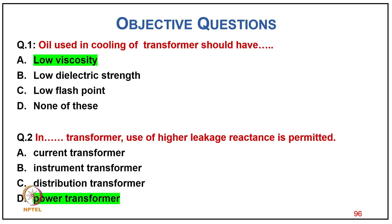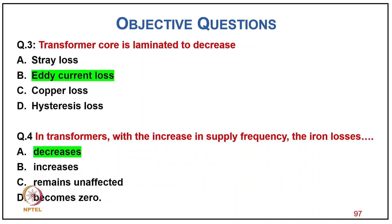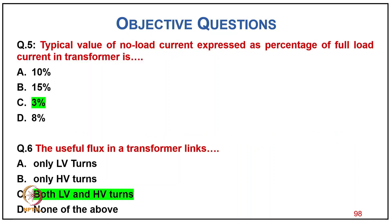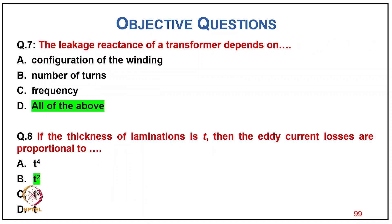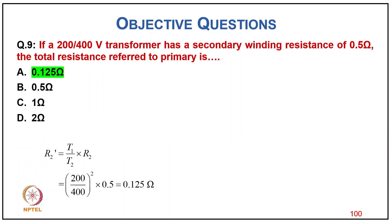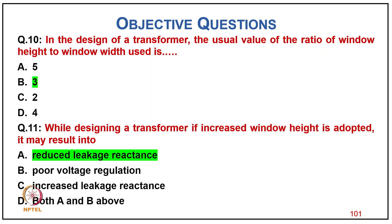Objective questions: Oil used in cooling transformers should have low viscosity. Power transformers use high leakage reactance. Transformer core is laminated to decrease eddy current losses. With increase in supply frequency, hysteresis losses decrease. Typical no-load current is about 3% of full load current. Useful flux in a transformer links both LV and HV turns. Leakage reactance depends on configuration of winding, number of turns, frequency, and lamination thickness t — eddy current losses are proportional to t². For a 200/400 V transformer with per unit reactance 0.05, the total reactance formula applies. The usual ratio of height to width of window is 3. Each window height adopted may result in reduced leakage reactance.